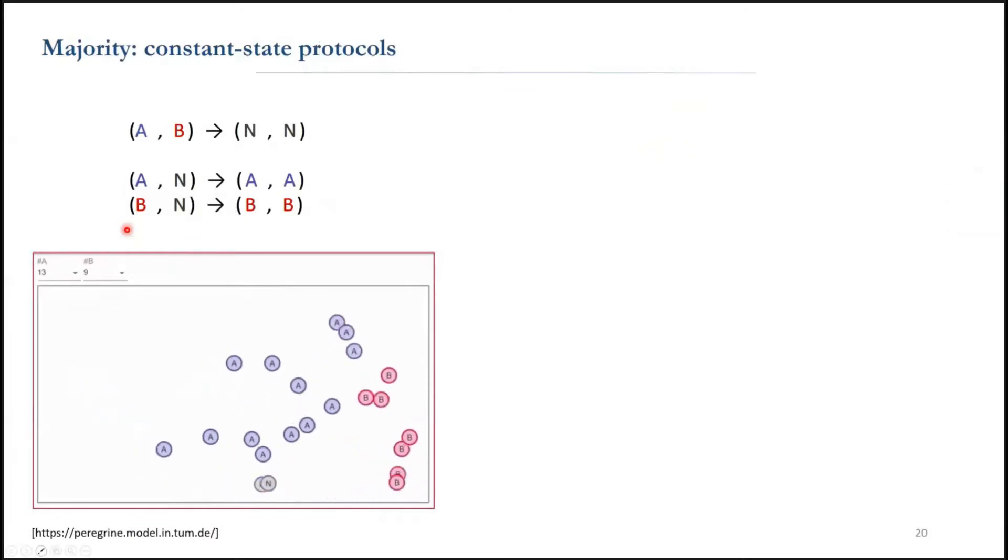This protocol is working for this specific example, but actually there are some initial configurations in which the result is incorrect. For example, if the initial gap between a and b is large, then the protocol is correct with high probability.